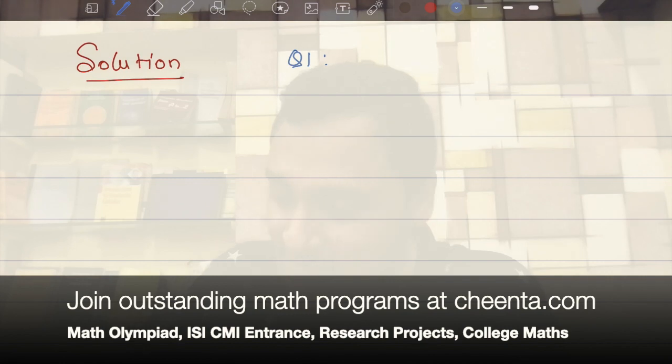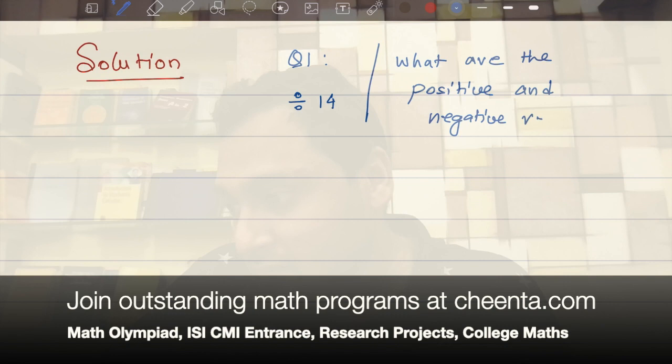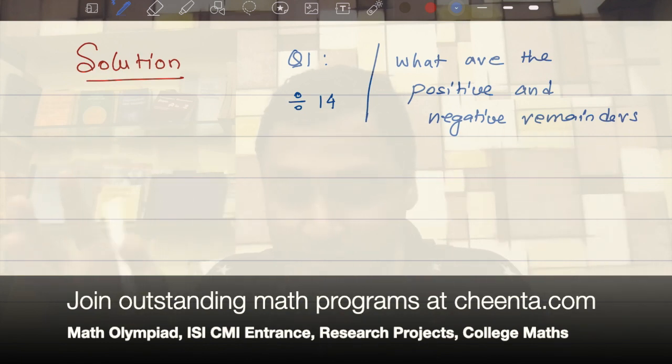So, question 1 is this. If you divide any number by 14, what are the remainders? What are the positive and negative remainders? And you can do the same strategy. You can take almost half of them as positive and the remaining half as negative. And give me examples of numbers of each kind.